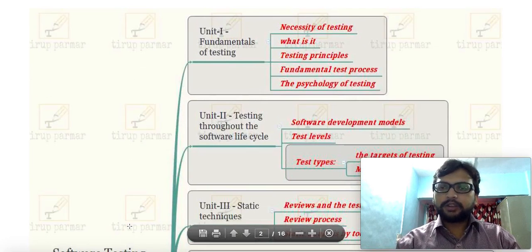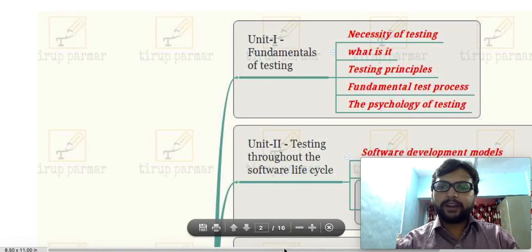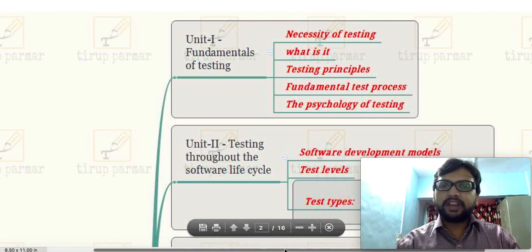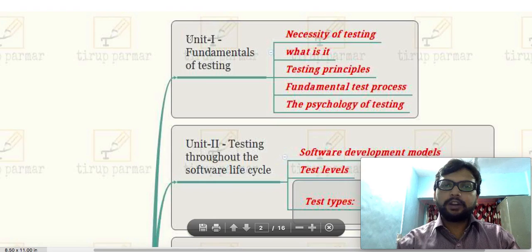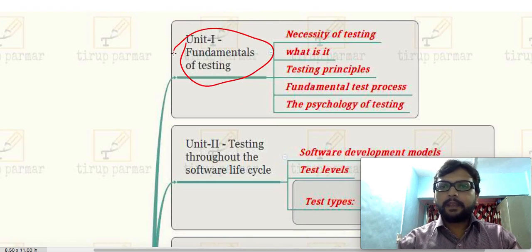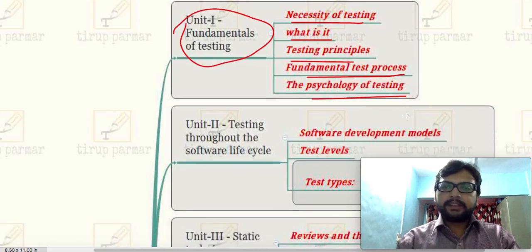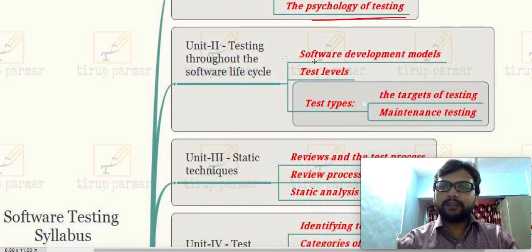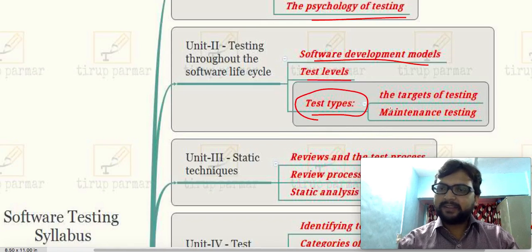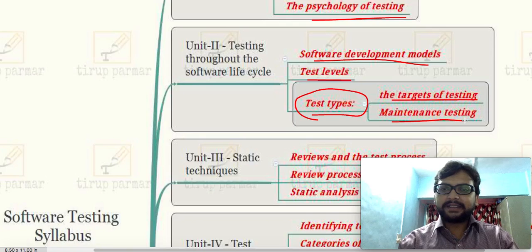This is the syllabus for the Software Testing subject, provided unit-wise with all the important points. In Unit 1 we discuss the fundamentals of testing — what is the necessity of testing, why and what is testing, what are the principles, what are the processes, and what is the psychology behind testing. In Unit 2 we discuss software development models, test levels, types of tests, target of testing, and maintenance testing.